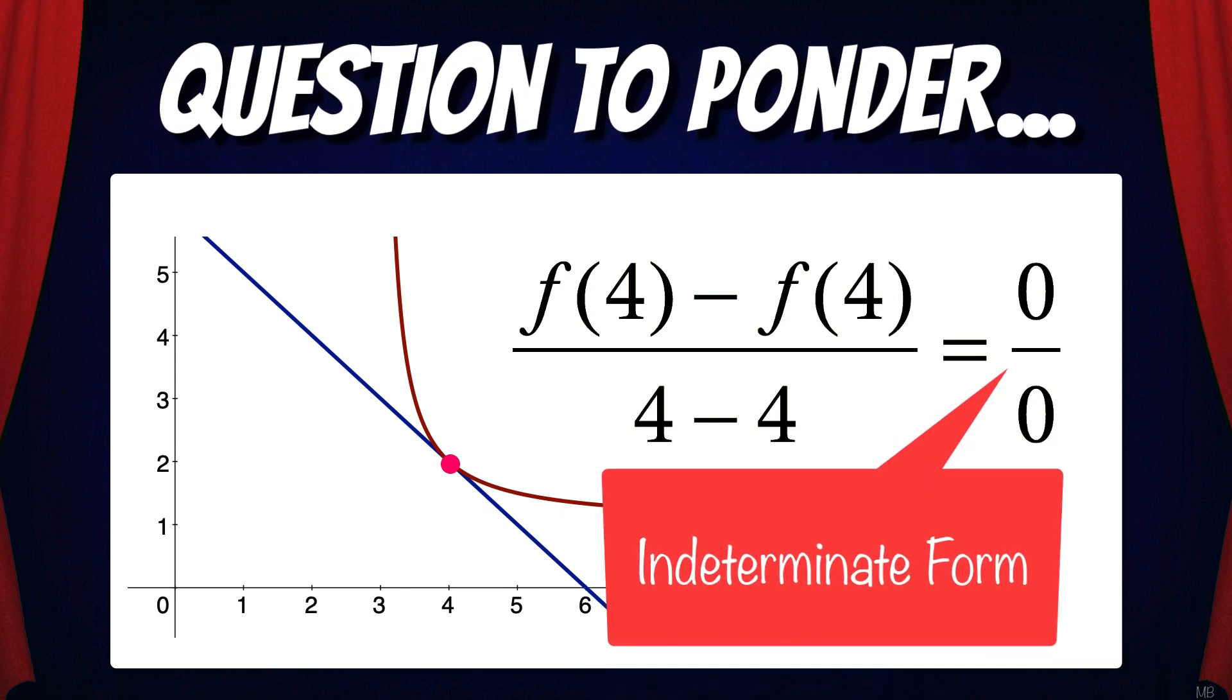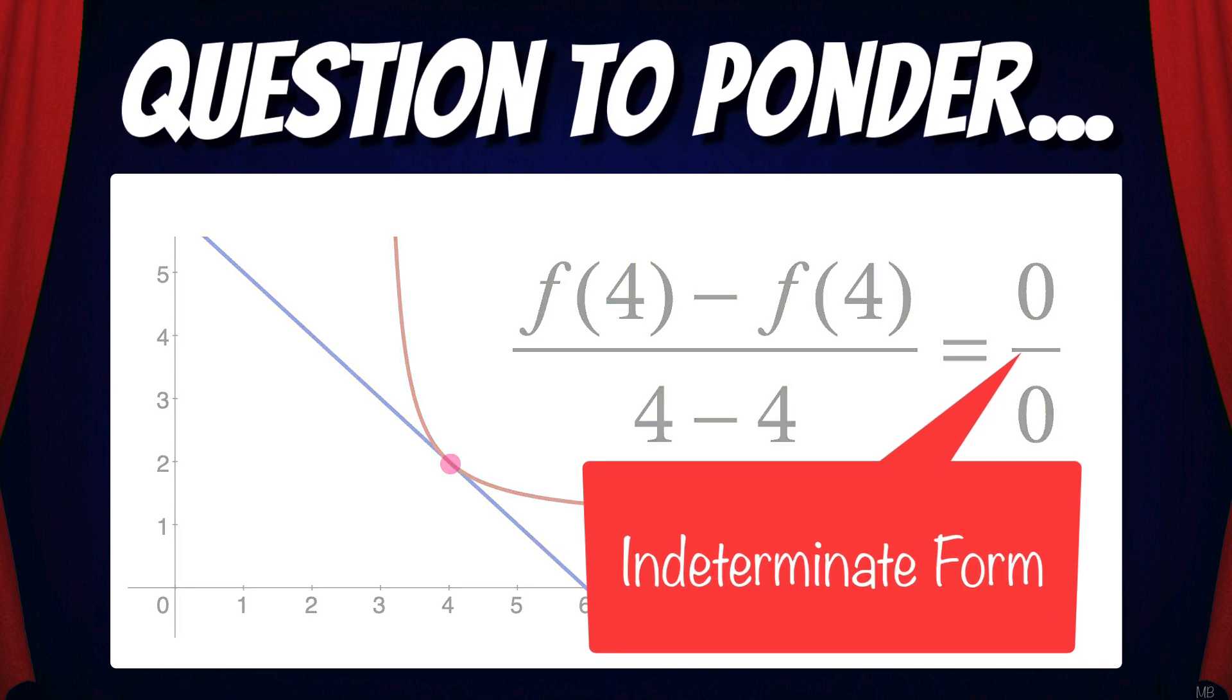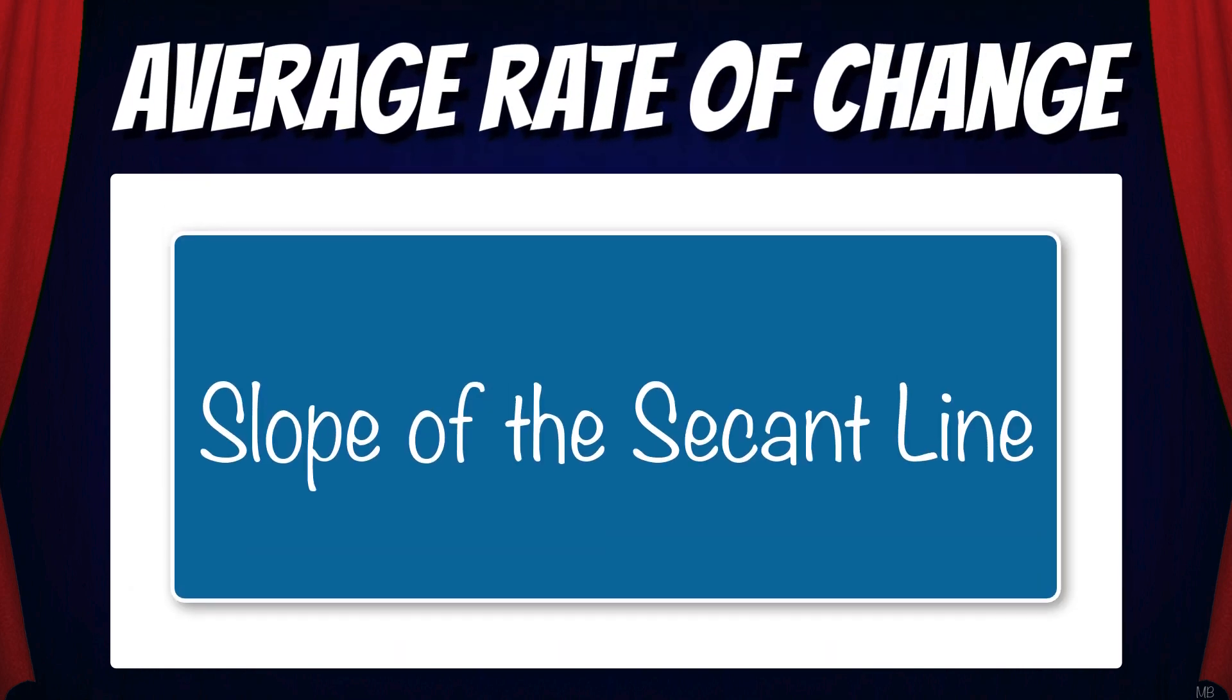In calculus, this is called an indeterminate form. We're going to talk about this more in a future video. For now, you need to memorize and truly understand that the average rate of change is the slope of the secant line.